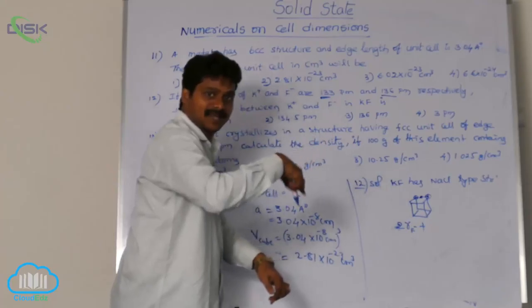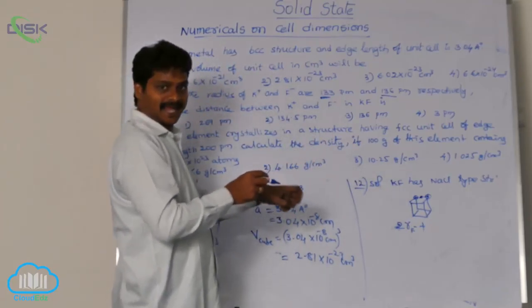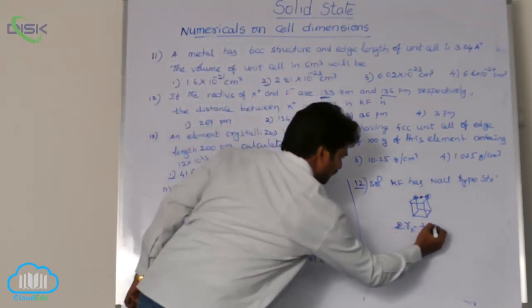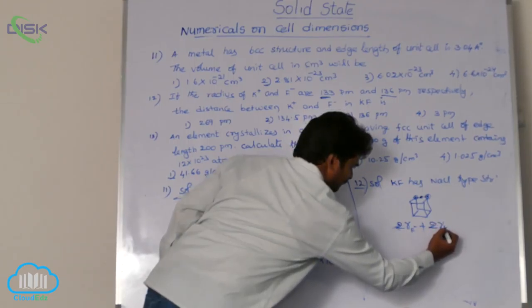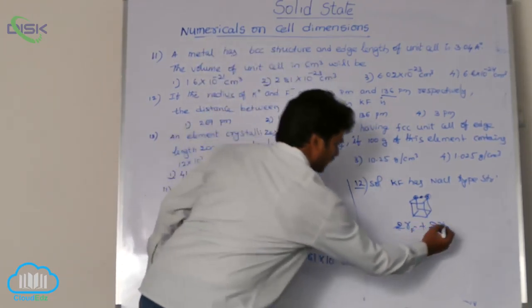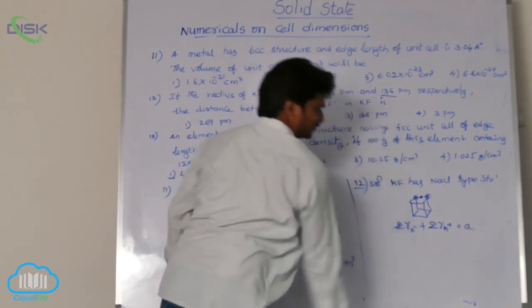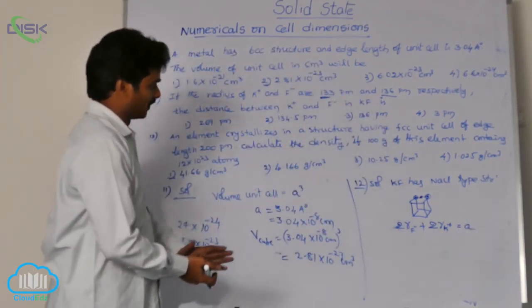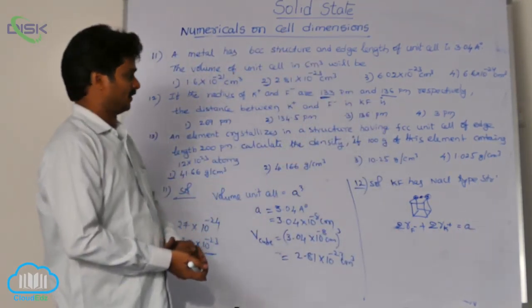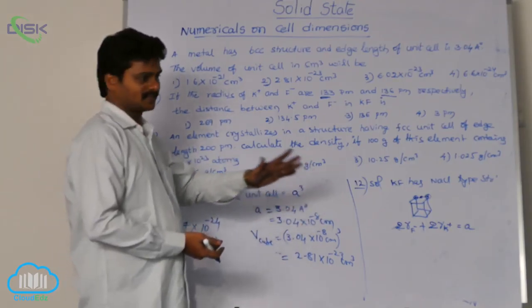Complete potassium ion is there. That means, diameter we have to take. That is why, 2 into radius of potassium ion equals to edge length A. So, this formula we can derive from the KF structure, FCC structure.